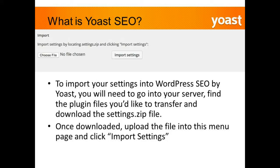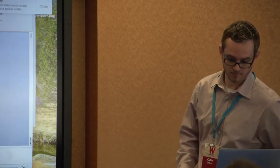To import settings, go into the other plugin and dive into the server files to find the settings.zip file within that plugin's files. Once you download that, upload it here and import settings, and WordPress SEO will take care of the rest for you.